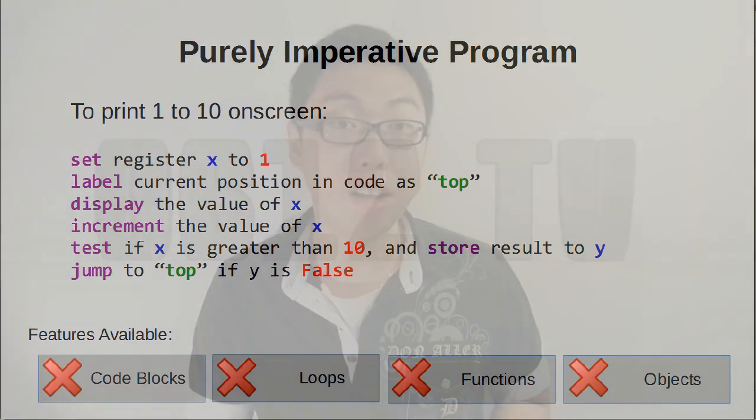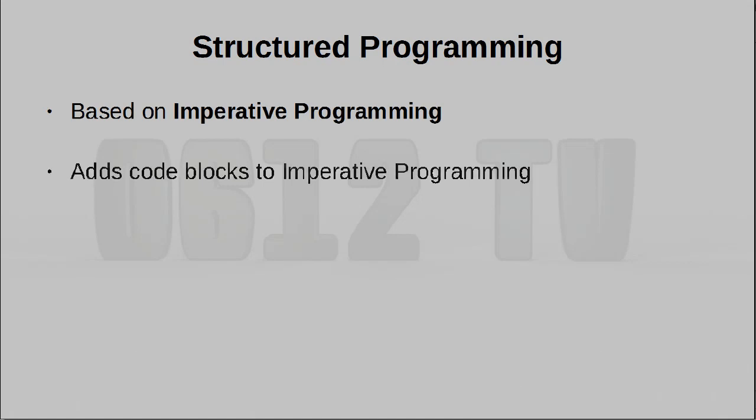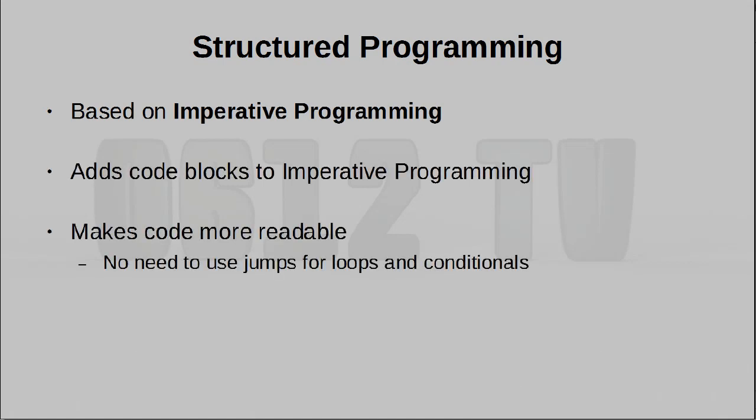This allows us to move on to the second style of programming called structured programming. Structured programming is built on top of imperative programming — it is a form of imperative programming. This particular style introduces code blocks, that is, blocks of code, for example within curly braces. The whole idea of having this is to make code easier to read, and to provide some additional syntactic sugar, for example, loops.